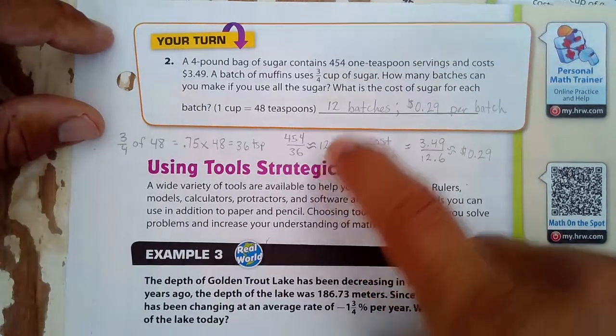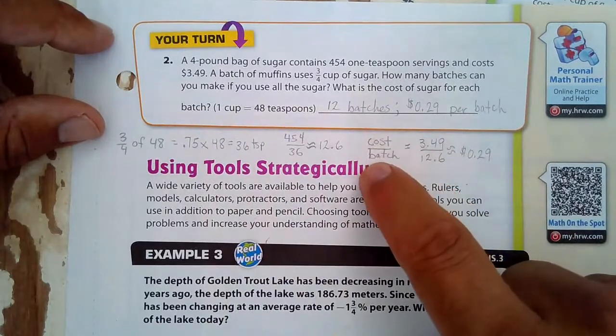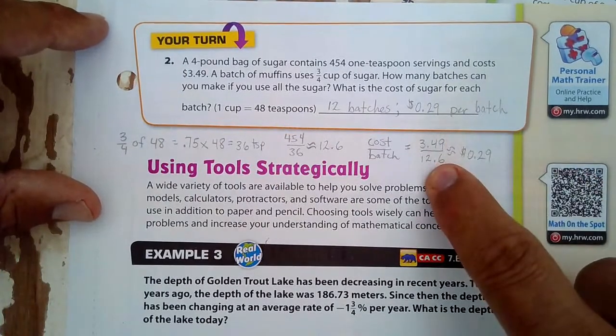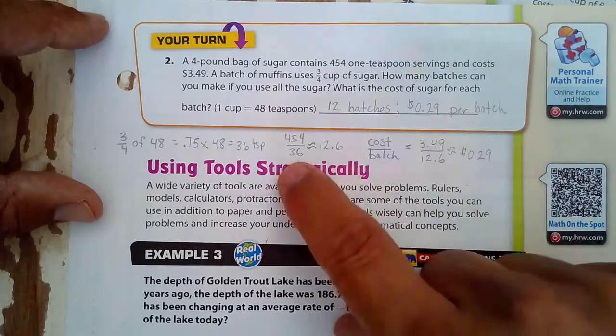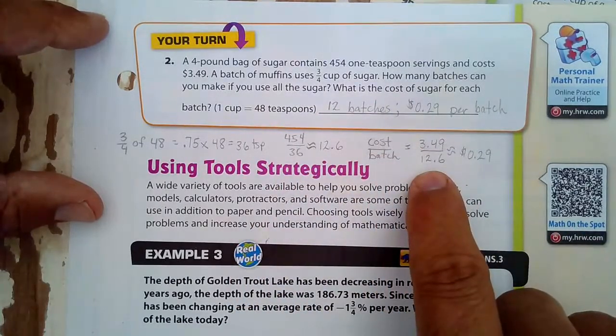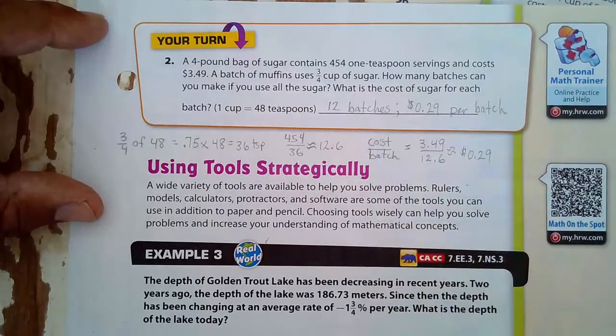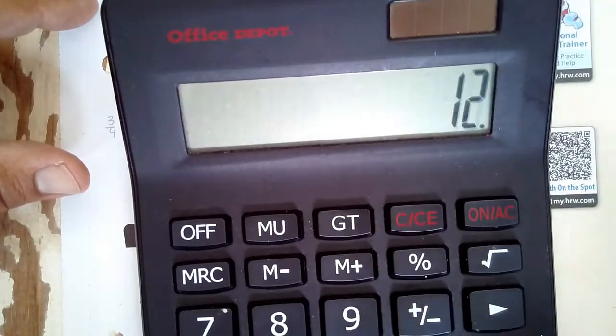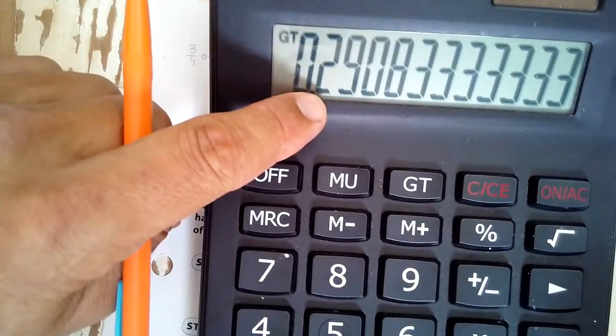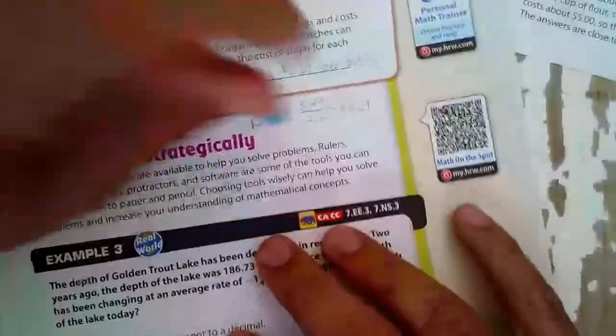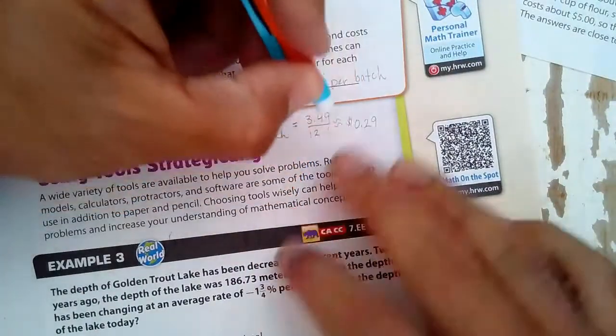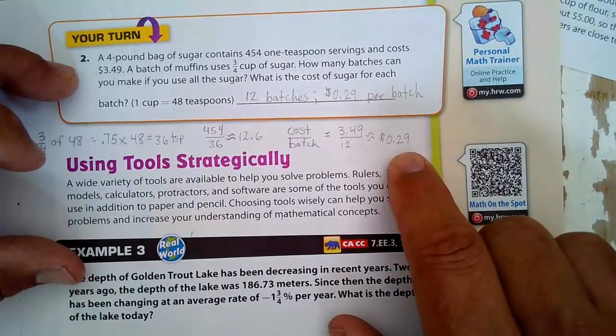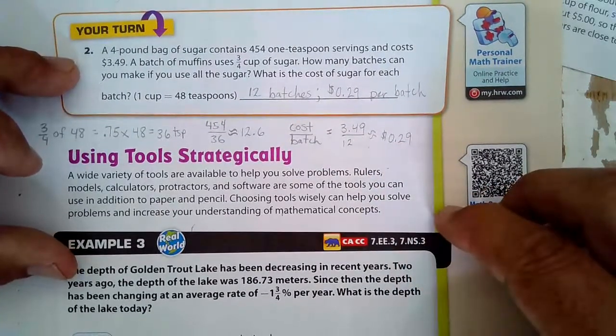Now we've got to know what's the cost per batch. The cost is $3.49, that's right here, divided by 12.6. Well, and now I know that I said 12 batches. Maybe I should have done 3.49 divided by 12. Let's see what happens here. 3.49 divided by 12. I would end up with the same kind of answer, 29 cents right there. So I should have changed this to just 12, not 12.6 as I plan on making 12. But it ended up rounding to the same amount, 29 cents per batch.